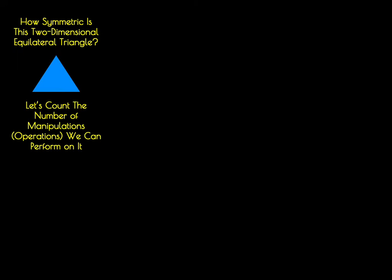To get us to start thinking about symmetry, we're going to consider this equilateral triangle and ask ourselves the question, how symmetric is this two-dimensional equilateral triangle? A way in which we can do this is to simply count the number of manipulations that we can perform on this object and return something that looks identical to what we started with. One operation that we've already stated that we can do is nothing to it. This is a symmetry operation, so there's one symmetry operation right there. Do nothing.